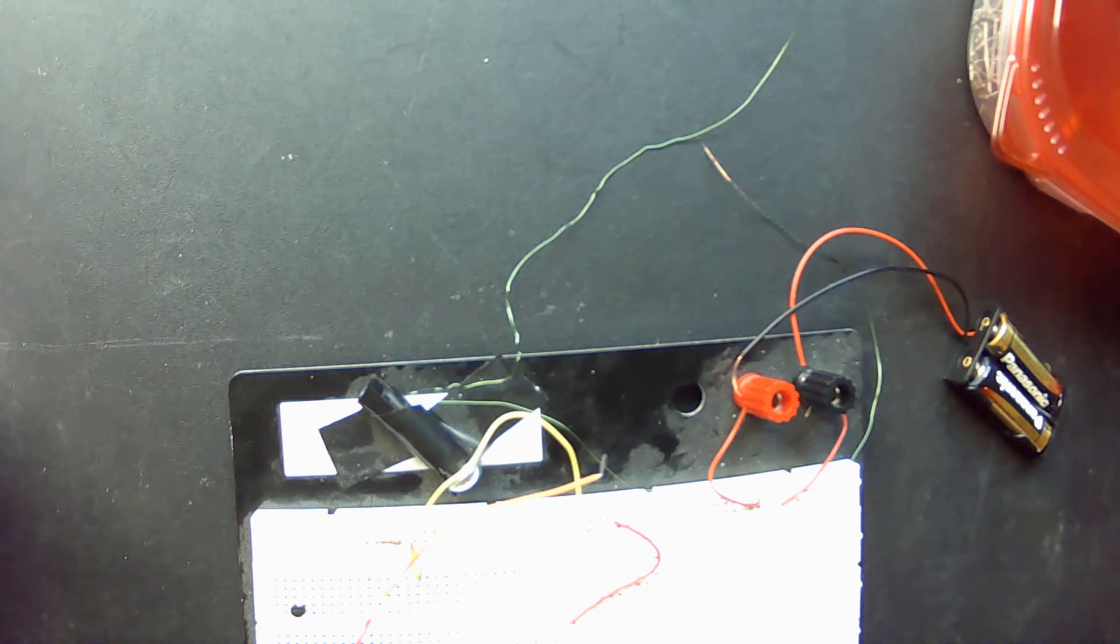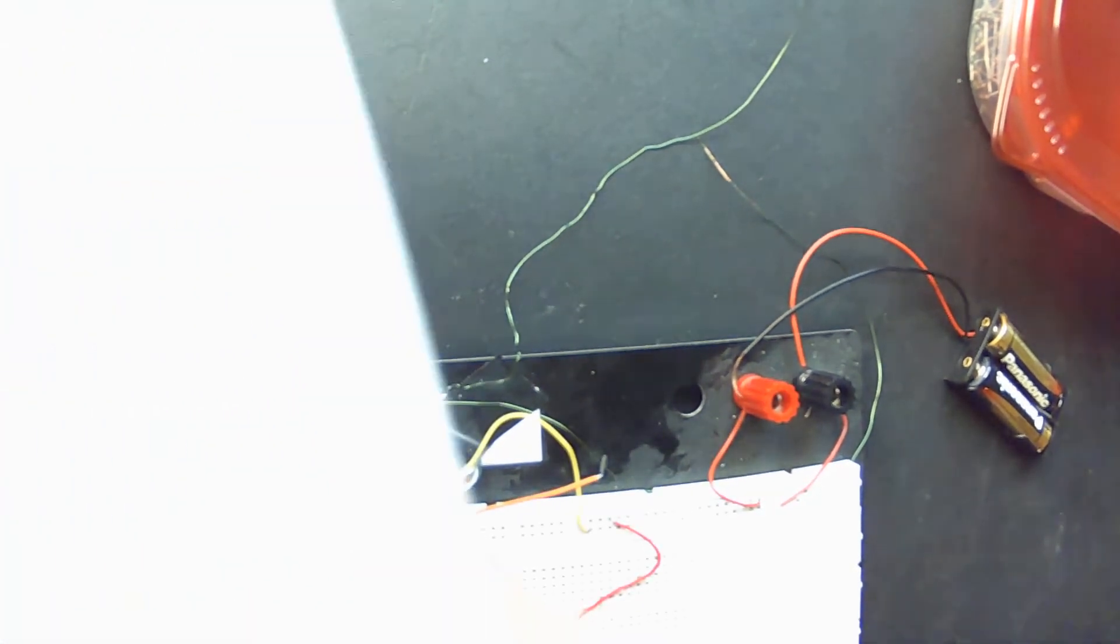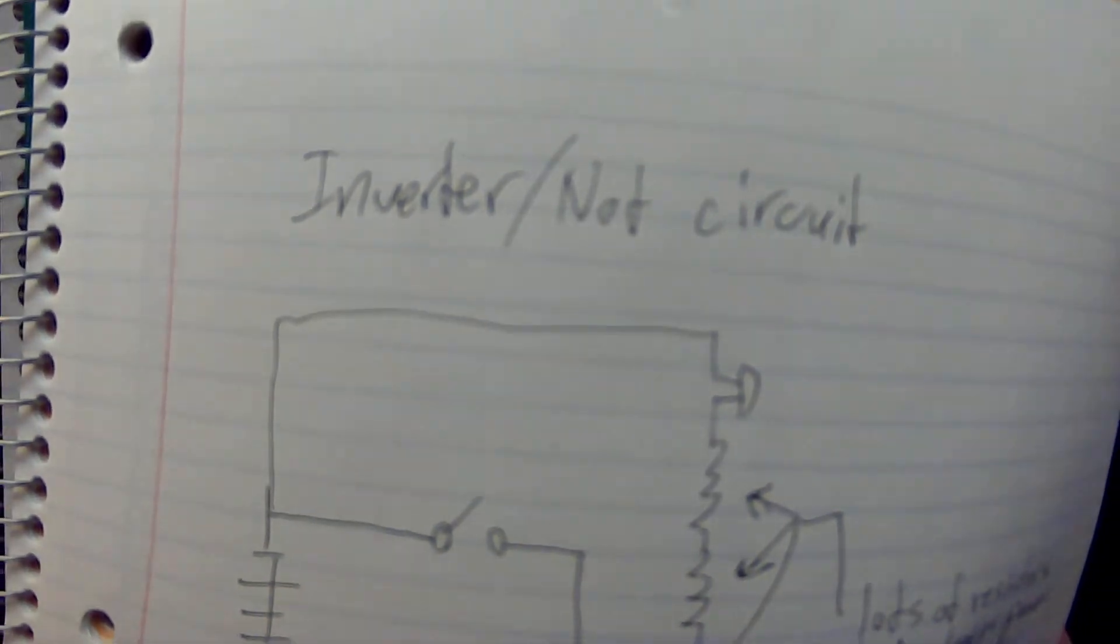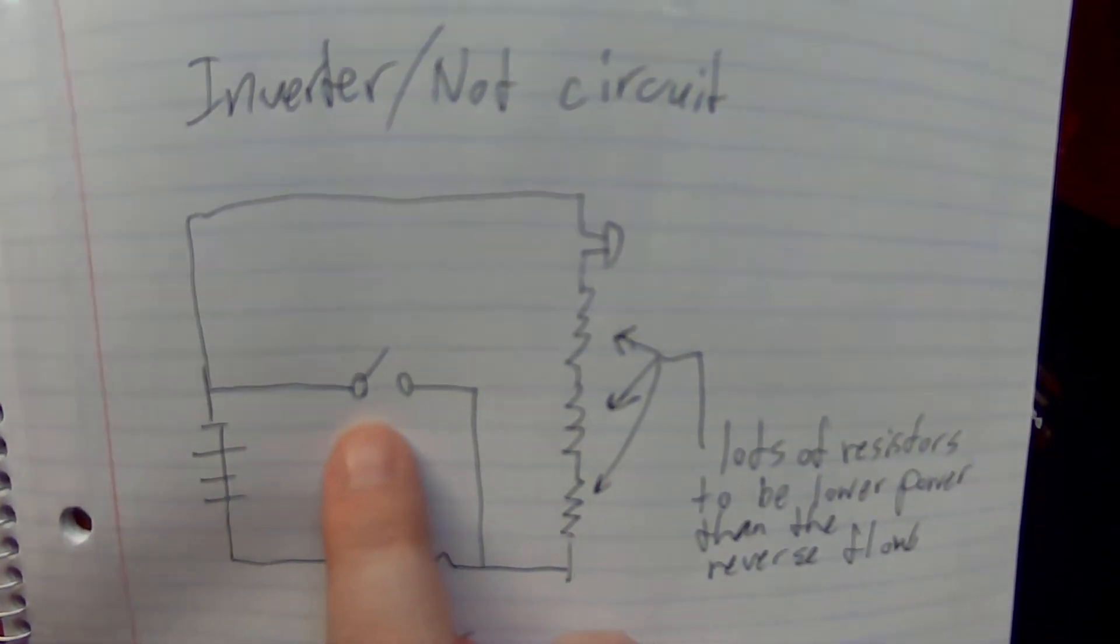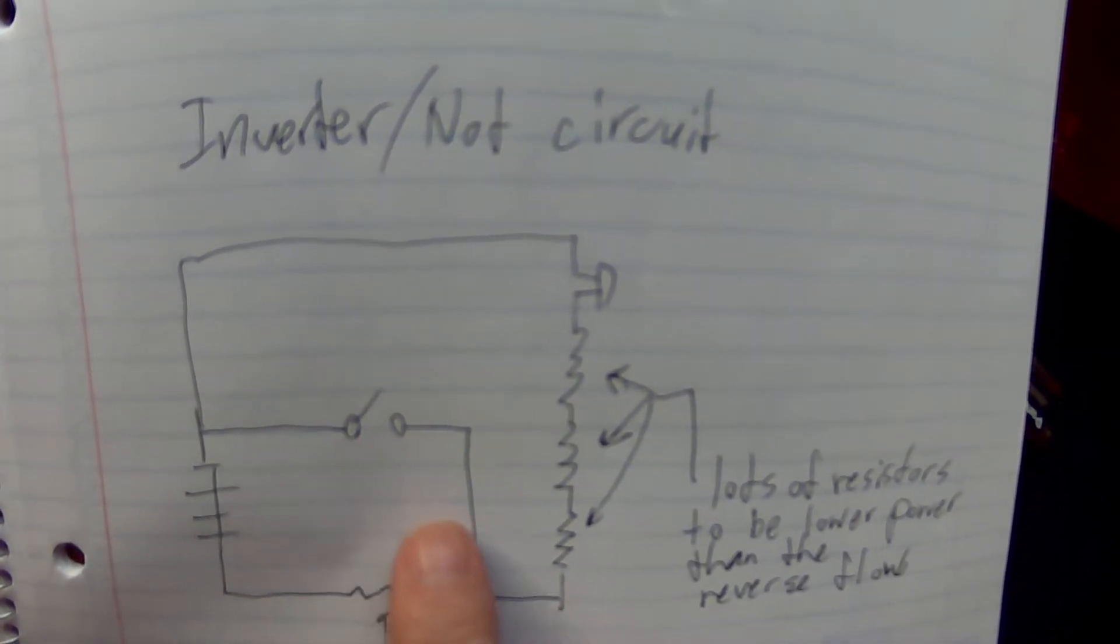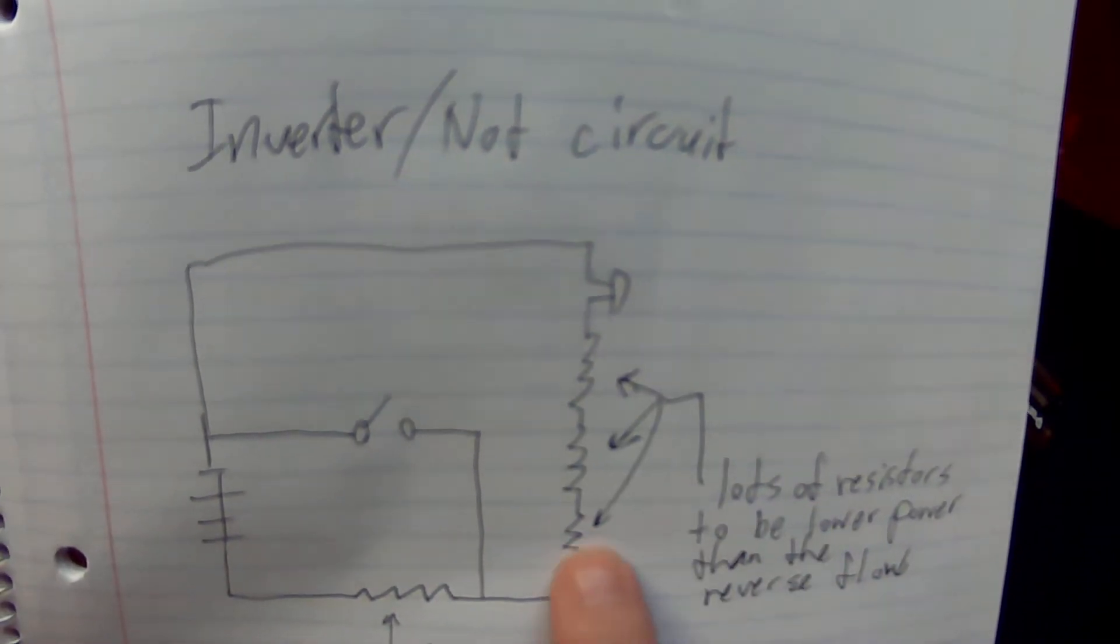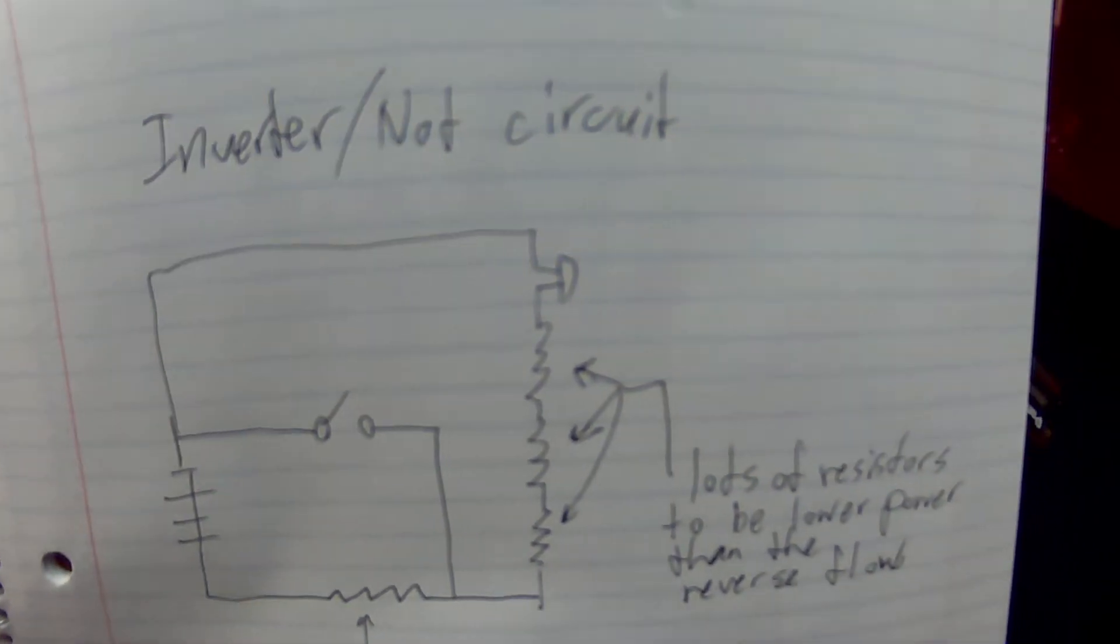Hello, this is a video about an inverter circuit, also known as a NOT circuit. It's a logic gate that when you switch on this switch, it turns to an off state. So it inverts this on state to an off state.